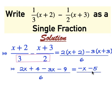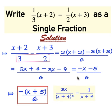So we have -x - 5 over 6. We can leave it like this as an answer. However, when we factor out the negative sign, we have -(x + 5) over 6 as a simplified answer.